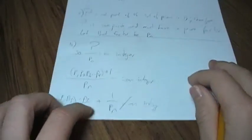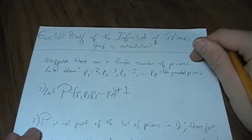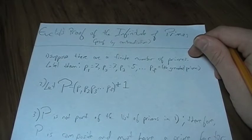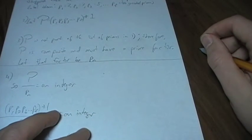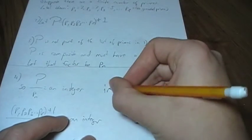There's a contradiction. That means the initial assumption that there are a finite number of primes is wrong. And there are, in fact, infinitely many primes.